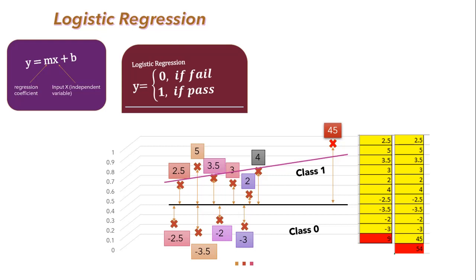So for dealing with this problem we can't go with the approach used in the linear regression model for finding the straight line. Instead, we'll use the sigmoid function, as its range is from 0 to 1 and this function is capable of dealing with outliers without affecting the straight line.